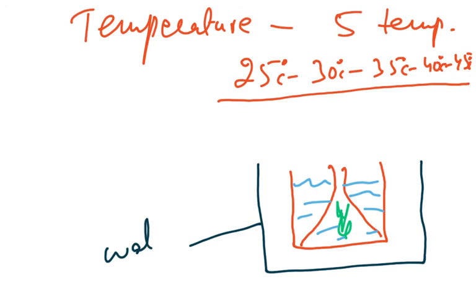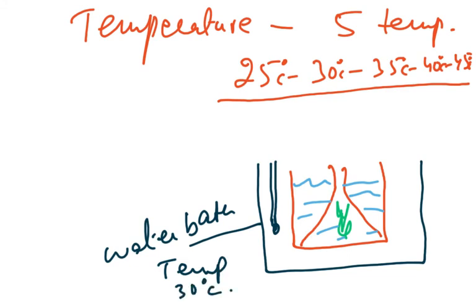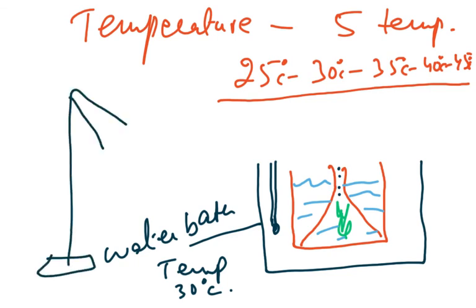Maintain the temperature at your chosen value using the water bath — for example, 30°C. Study the bubbles produced per unit time. The lamp remains at the same fixed position. Do not remove the heat shield, as that would cause an uncontrolled temperature change. The water bath is the correct scientific way to control temperature.